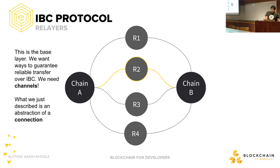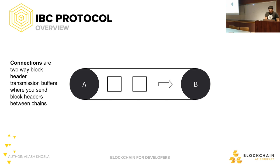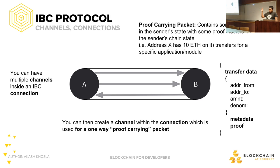Theoretically you could build anything on top of IBC connections, but to make it simpler we've created another abstraction layer called channels. Relayers should probably be incentivized — we haven't quite worked out the economics yet, but the idea is you'd include a fee payment in the packets you're relaying, and whoever relays it gets to claim those fees. Connections are just two-way block-header transmission buffers — you can think of them as one giant pipe.